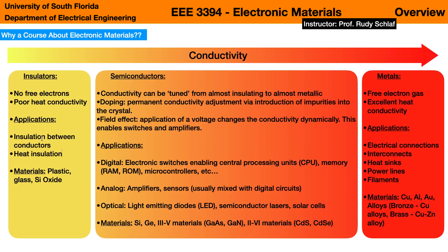Poor heat conductivity makes insulators great for keeping hot bodies hot and cold bodies cold. Applications include insulating between conductors and heat insulation. When it comes to materials, there are plastics used around wires as insulation; glass is a really good insulator; silicon oxide is the insulator of choice in many integrated circuits. Over recent years and decades, other oxides have also become popular for various reasons — oxides are often insulators.